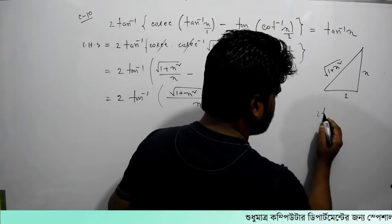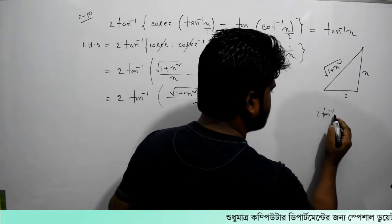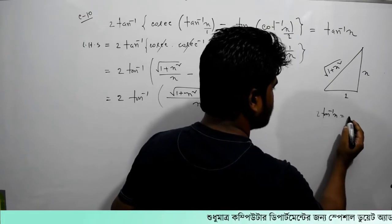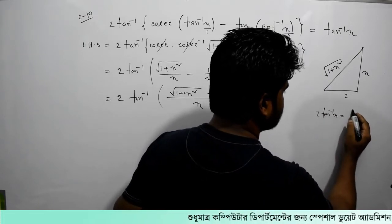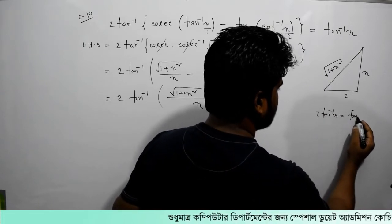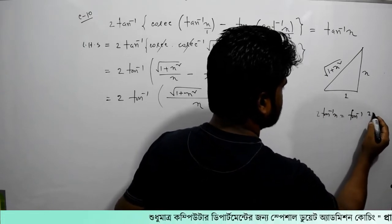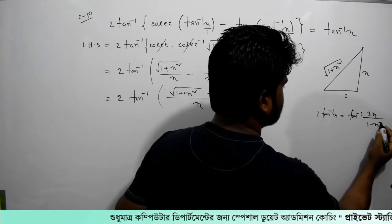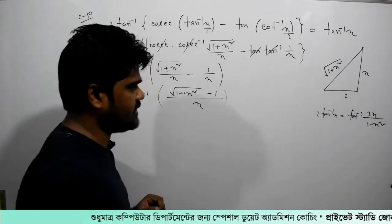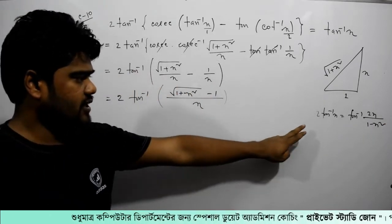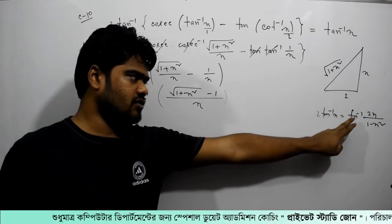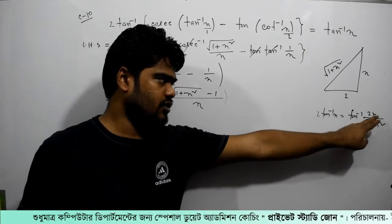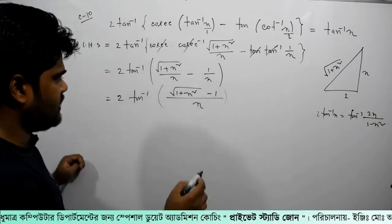2 tan inverse x is equal to tan inverse of 1 minus x squared. Then x equals tan inverse of 2x divided by 1 minus x squared.